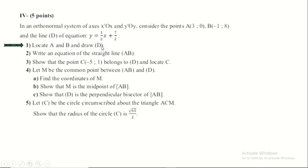To draw the straight line D we need two particular points in order to join them. If we take x equals zero then y will be 7 over 2. Note that both terms have the same denominator 2, and 7 is odd — adding or subtracting 1 makes it divisible by 2. So it's easier to take particular values x = 1 and x = -1.